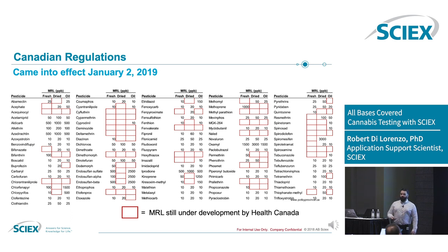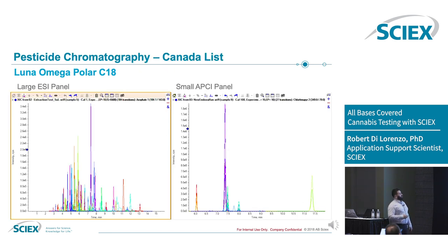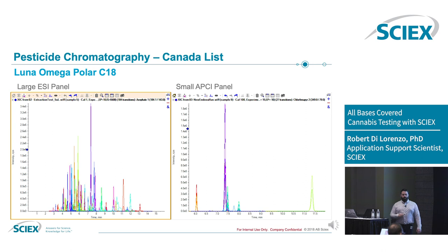Cannabis is not a regular food commodity in terms of the way you analyze it, because there's a huge amount of matrix interferences and a huge amount of ion suppression capability — it's just really the dirtiest, nastiest matrix we've ever seen. What we were able to do is try a different column phase, a Luna Omega C18, to do some chromatography for a large electrospray panel to hit the low-level detection requirements for the vast majority of compounds on that list.